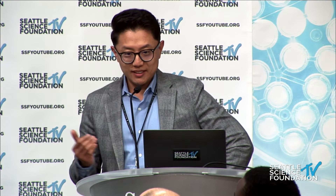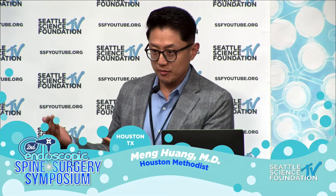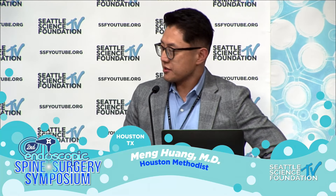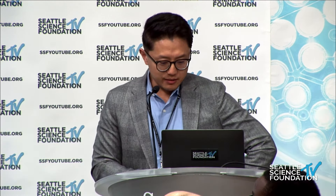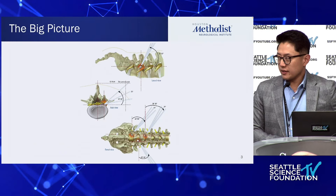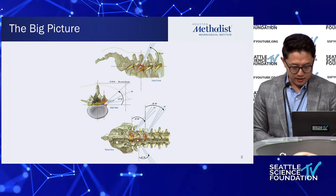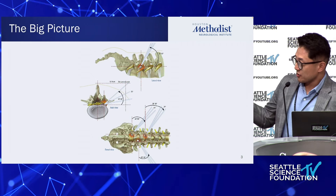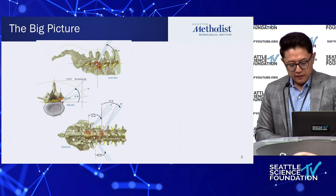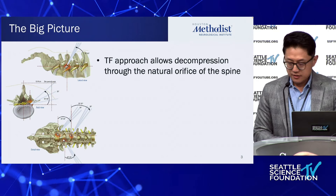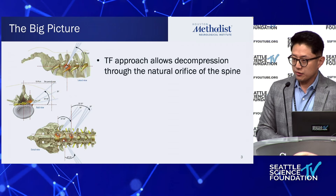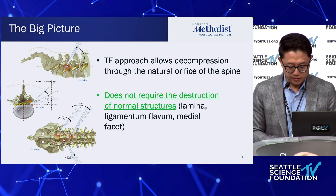As we talked about, nowadays we're hearing more about uniportal versus biportal and interlaminar approaches, but the history and foundation of full endoscopic surgery is transforaminal. The reason transforaminal is so impactful is that this is literally the least invasive way to access the spinal canal. The transforaminal approach allows decompression of the spine through the natural orifice.